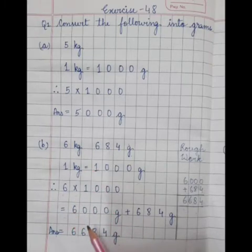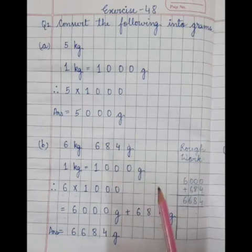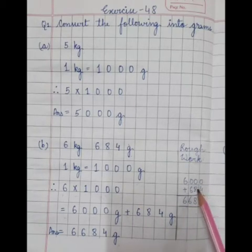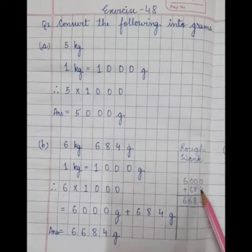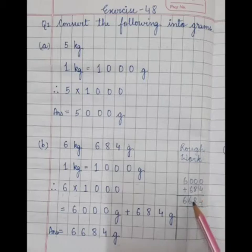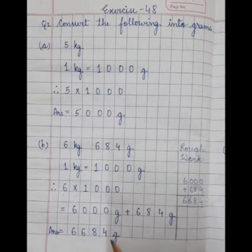Now, we will write these numbers here: 6000 gram, 684 gram and we will plus it. For doing addition, we will do the rough work. 6000 plus 684 is equal to 4, 8, 6 and 6. And this is our answer: 6,684 gram.